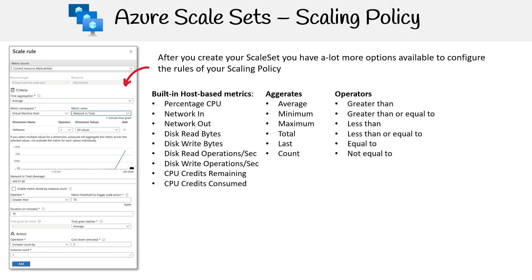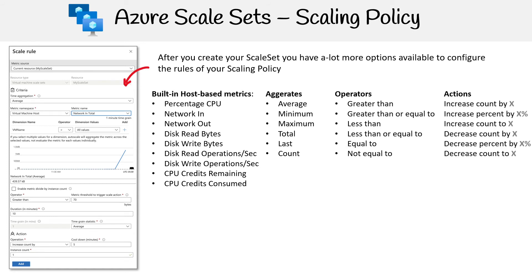Then you have your operators — you can say greater than or greater than or equal to. Then you have your actions: you can increase the count, adding a set number of servers, or increase by percentage. For example, if you had 10 servers and want to increase load by 30%, that would add three additional servers.